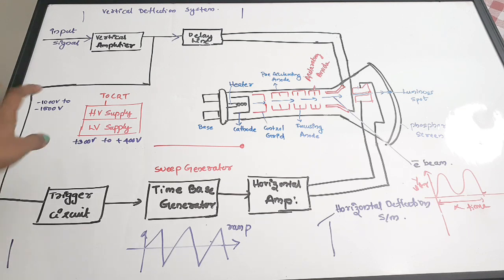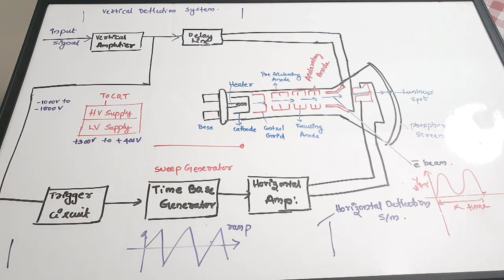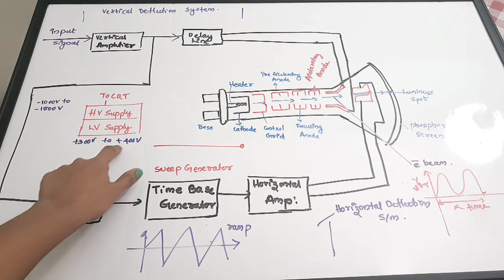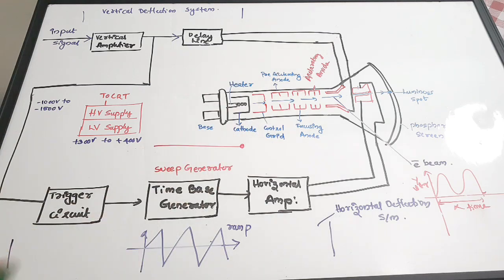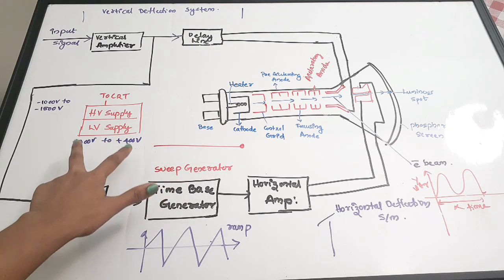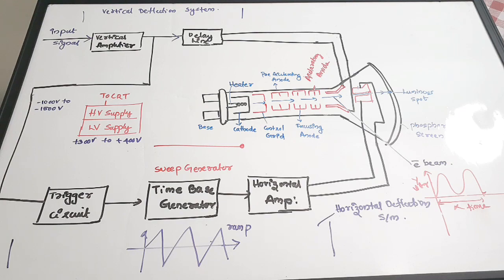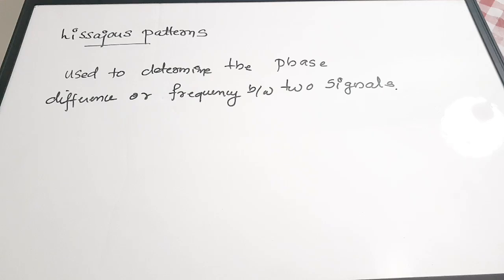Regarding the power supply, there are two types: a high voltage power supply ranging from minus 1000 to minus 1500 volts intended for the CRT — because it deals with electron beam generation and focusing, requiring a negative supply — and a low voltage power supply ranging from plus 300 to plus 400 volts for all the other units. That covers the block diagram of the cathode ray oscilloscope.